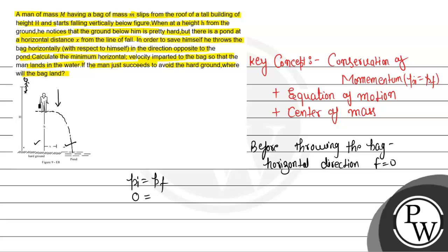For the final momentum, considering the whole system of bag and person: if the person has velocity capital V and the bag has velocity small v, we write capital M into capital V plus small m into small v equals zero. Here, small m is the mass of the bag and small v is the velocity of the bag, while capital V is the velocity of the man. From this, capital V equals minus small m into small v divided by small m. This is equation number one.